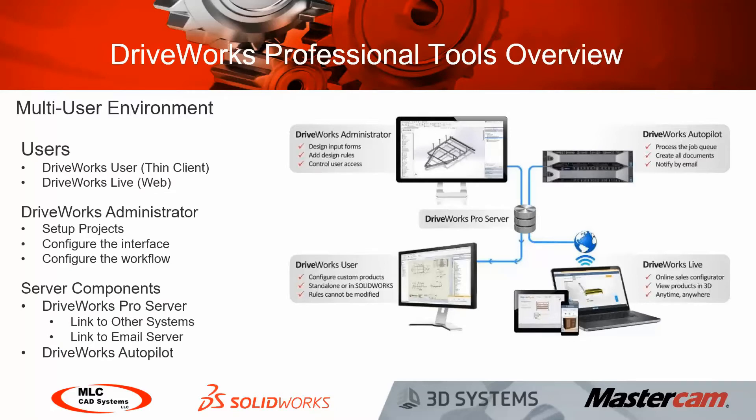This is all brought together with server components. The DriveWorks Pro Server allows you to link to other systems — so if you wanted to take inputs from an ERP system or output things like emails to customers, the DriveWorks Pro Server is the tool for that. DriveWorks Autopilot is really the horsepower behind the system: it processes any jobs in your queue, creates your documentation, and generates your emails.